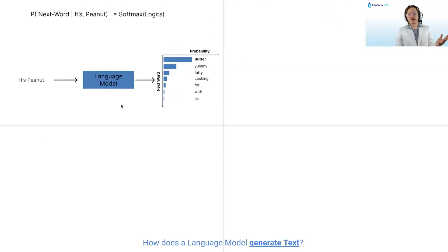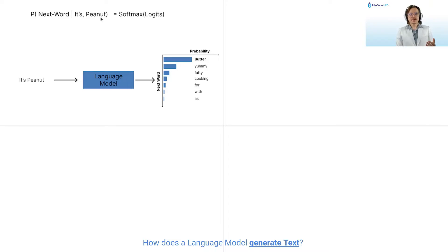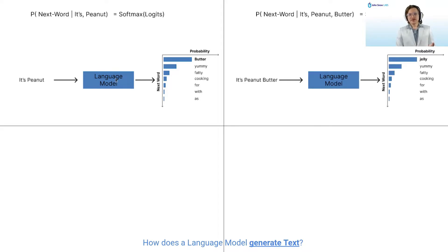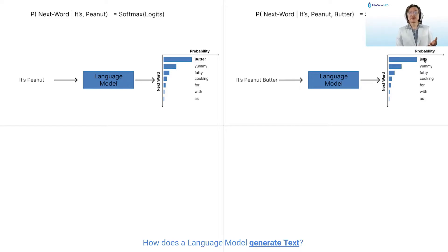A final example to really understand what we are talking about: let's say we start with the string 'it's peanut.' The model could say the next word could be 'butter.' Given 'it's peanut butter,' we ask the model again what should be the next token, and it says 'jelly' — the highest probability is jelly. Then given 'it's peanut butter jelly,' the model says 'time.' And after 'peanut butter jelly time,' it would either output end-of-sentence or generate a couple more tokens.